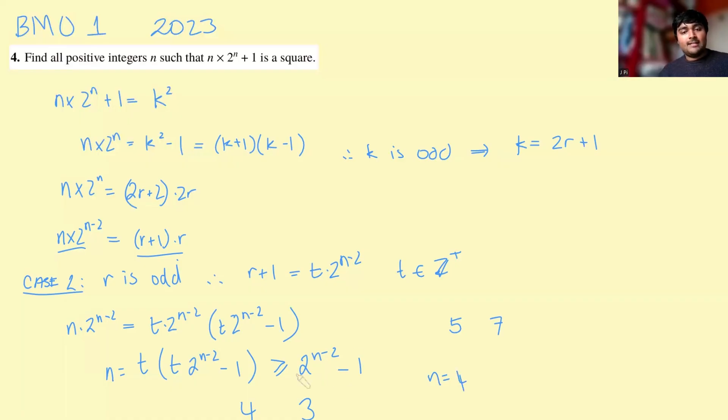So when you try n is 4, this could potentially work. So let's just check. So if you do 4 times 2 to the 4 plus 1, 2 to the 4 is 16. Multiply that by 4 is 64, plus 1 is 65. That's not a square number, so that isn't a solution.